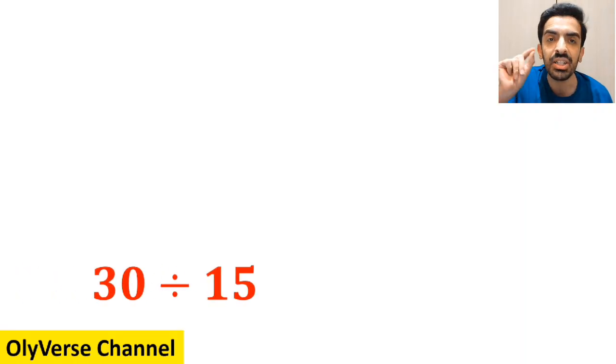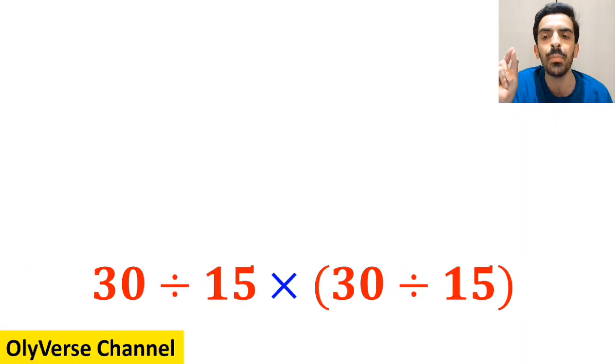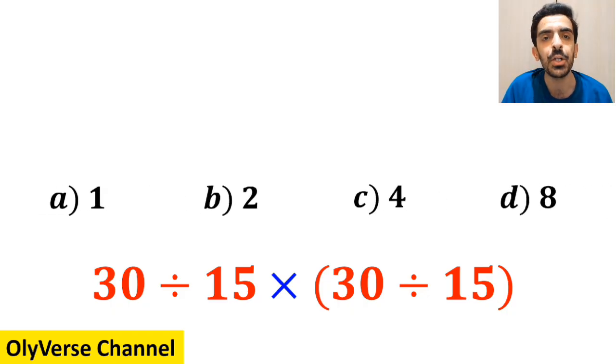What is the value of the expression 30 divided by 15 multiplied by open parenthesis 30 divided by 15 closed parenthesis? Which option do you think is the correct answer to this question?